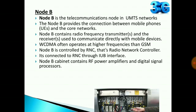Node B is the telecommunication node in the UMTS network. Node B provides a connection between the mobile phones and the core network. It contains a radio frequency transmitter and receiver used to communicate with the mobile devices. WCDMA often operates at a higher frequency than GSM — that is, 2100 MHz — whereas GSM works with 900, 1800, and 1900 MHz frequencies.